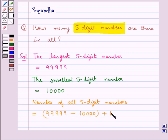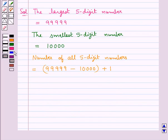This would give us the number of all 5-digit numbers. So, we get this is equal to 89,999 plus 1 which is equal to 90,000.